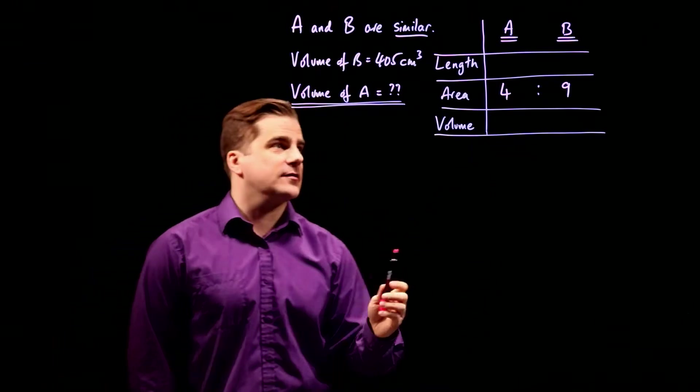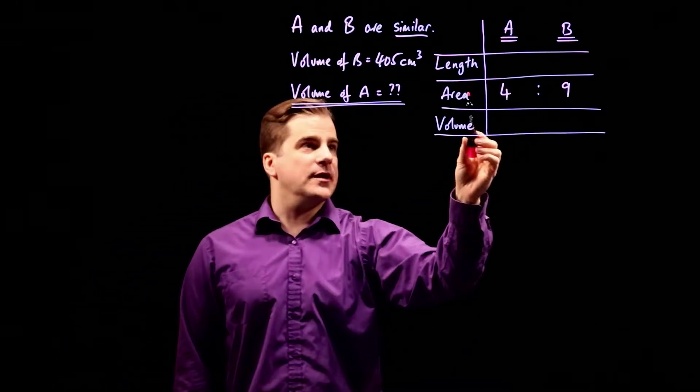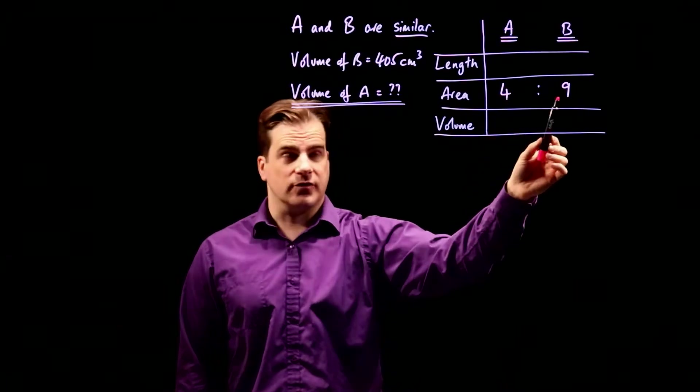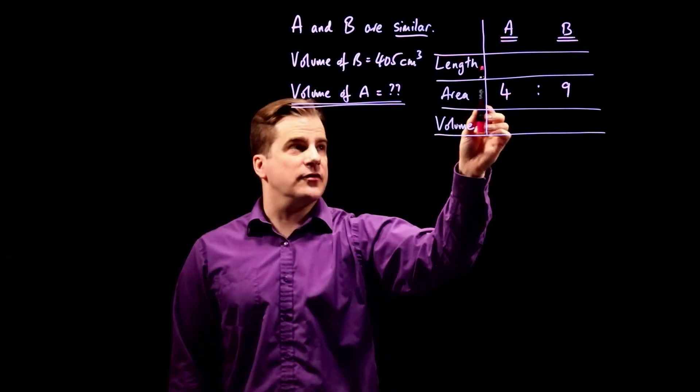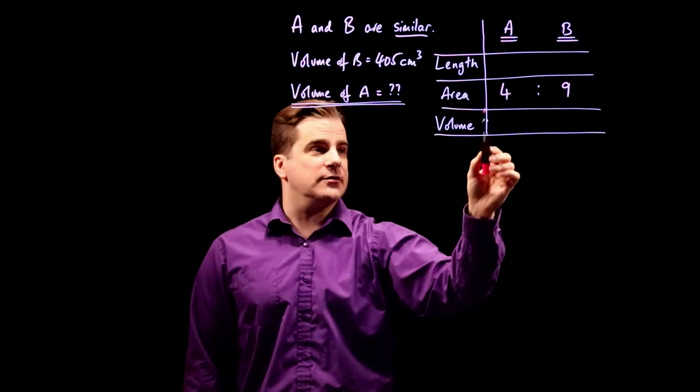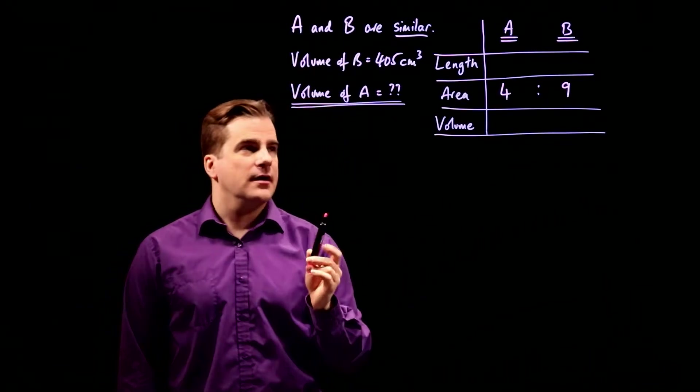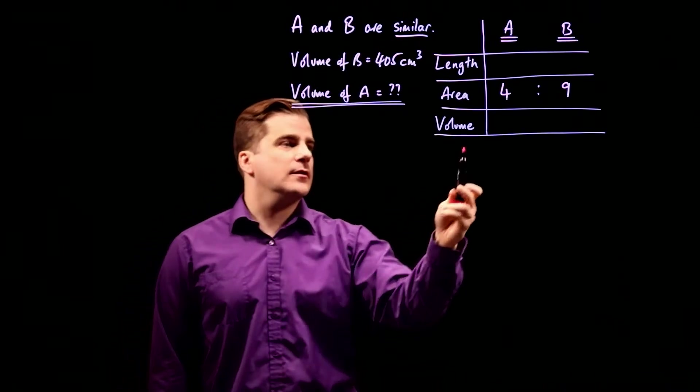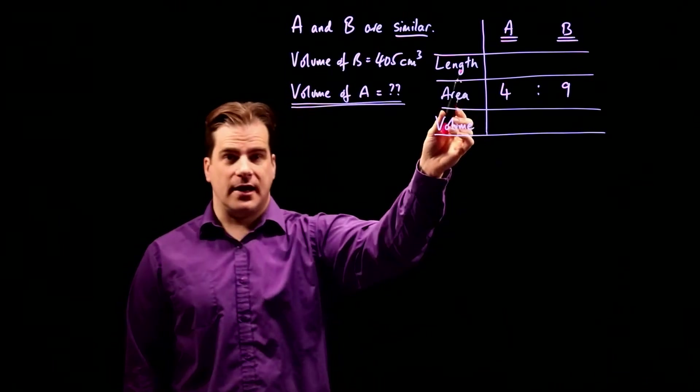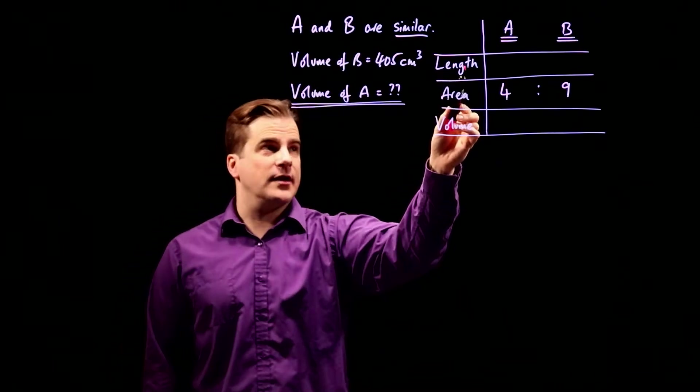Write it out like this. We have A and B and we know that the area ratio is four to nine. And what we're going to do is work out the length ratios and then the volume ratios. Now, I know it's not asked about length in this question, but write this down anyway, it's important.